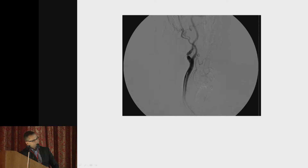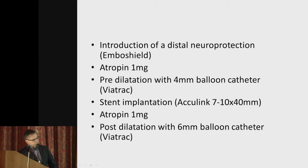Selective arteriography was performed, which showed very tight stenosis of the internal carotid artery more than one centimeter from the bifurcation. A distal neural protection embolic device was introduced, and the patient was given one milligram of atropine. Pre-dilation with a four-millimeter balloon catheter was performed.